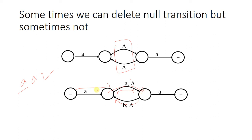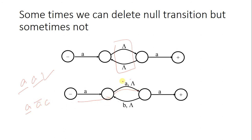The null transition makes A and B optional — the string can be accepted with or without these patterns. For example, with double A: you move here, take the null transition, come here, and for the next A you reach the accepting state. But with three A's: for the first A you move here, for the second A you use the A transition, and for the third A you use the A-plus transition and get accepted. So we cannot remove this null because it makes the path optional.